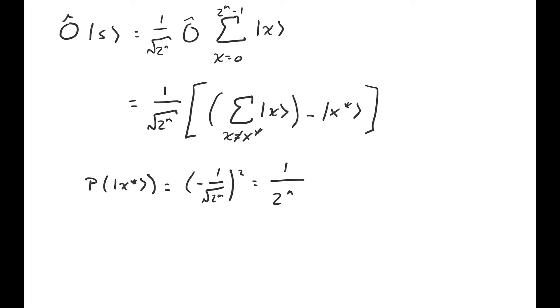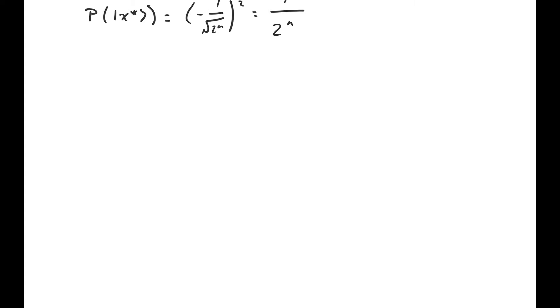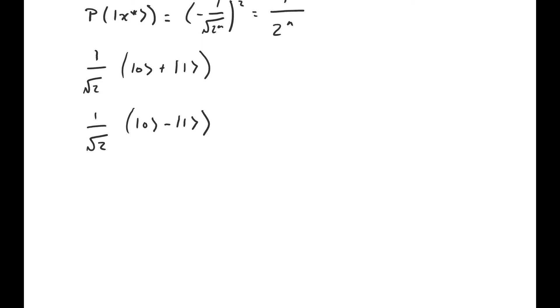This brings up the question: is it possible to tell these two states apart — one where we have the uniform superposition, and one where we have the uniform superposition except the coefficient in front of one of the basis vectors is negated? And of course it is, otherwise Grover's algorithm wouldn't exist. Let me show you how, in the case of a single qubit system where the uniform superposition consists of the sum of two basis vectors. Let's say x star equals 1, so the two states are 1 over root 2 times (|0⟩ + |1⟩), and 1 over root 2 times (|0⟩ − |1⟩).